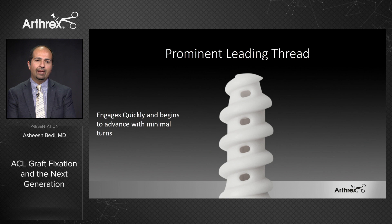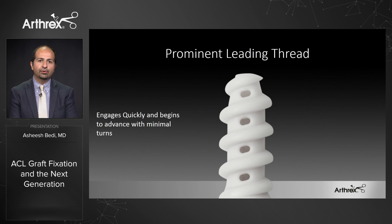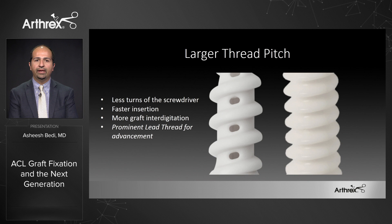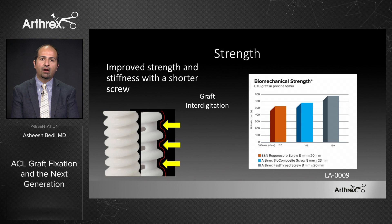The fast thread engages quickly and begins to advance with minimal turns. Specific design related to the pitch and threads allows this to happen relatively easily. It also has vents which facilitate ingrowth for bone and potential venting for delivery of biologics. The larger pitch thread takes fewer turns of the screwdriver to advance, allows for faster insertion, and importantly allows for more interdigitation of the graft between the threads. That prominent lead thread allows reliable advancement.